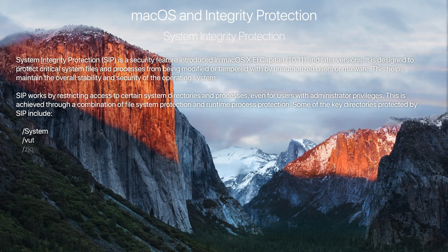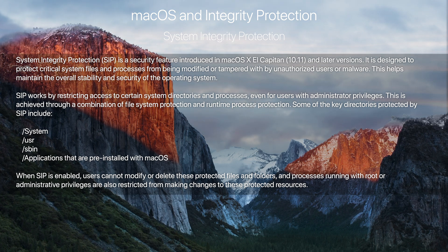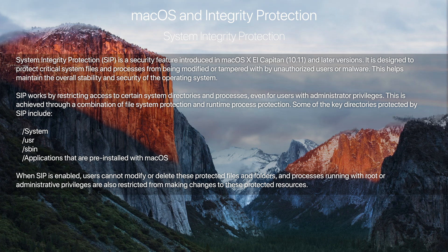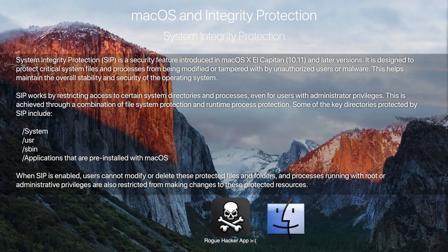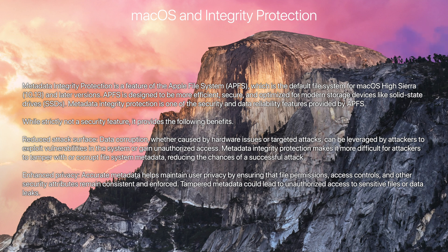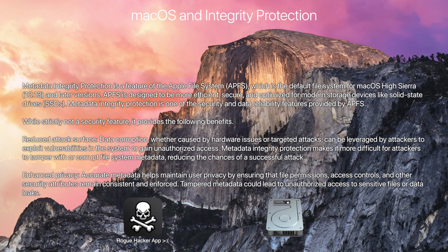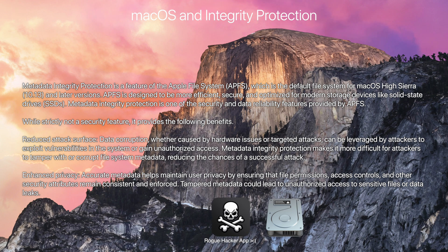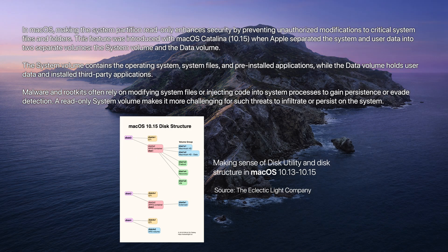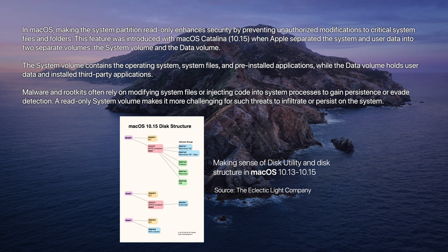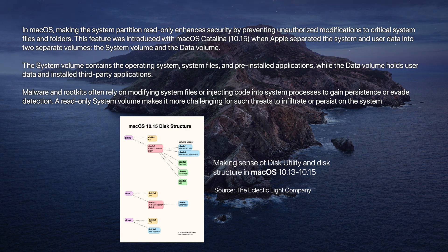SIP, or System Integrity Protection, restricts the actions of the root user and privileged processes that can be performed on critical system files and folders. To translate that into plain language, a rogue application will have a much tougher time hacking your OS as it doesn't have permission to do so. Integrity protection also exists in the file system itself — in APFS — with metadata integrity protection, which uses cryptographic verification of metadata to help prevent tampering and protect against malware attempts to modify the system. The system itself now exists on a separate partition within the APFS container that is read-only during normal operation.